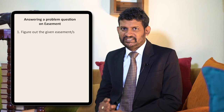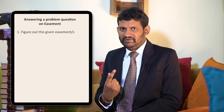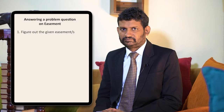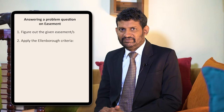Often they'll give you two to three easements — perhaps a right of way, right of storage, right of sign. Next, you have to apply the Ellenborough criteria. There are four criteria from Re Ellenborough Park. The first criteria is there must be a dominant tenement and a servient land.